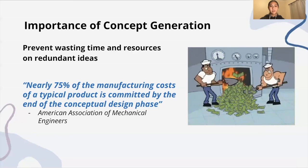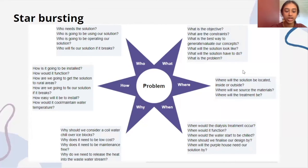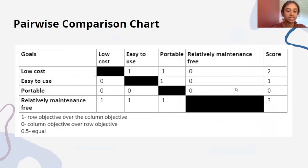Taneika will now tell us about the concept generation and evaluation tools used. Our team used the concept generation tools of starbursting, brainstorming, pairwise comparison chart, and an evaluation matrix to aid with our discussion of concepts and solutions. Initially, we used starbursting to brainstorm questions in a systematic way, categorised into who, what, where, when, why, and how questions. This allowed us to fully understand the different aspects of the problem and contemplate different possible solutions. Using the PCC method, we were able to identify our main goals — low cost, easy to use, portable, and low maintenance — and rank their importance in relation to the overall project to help determine which solutions are most suitable.